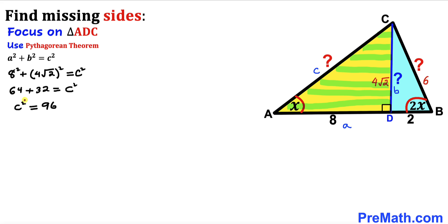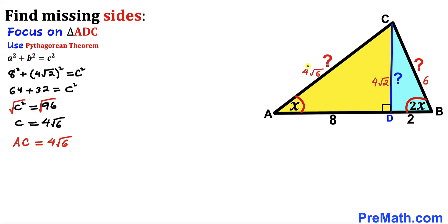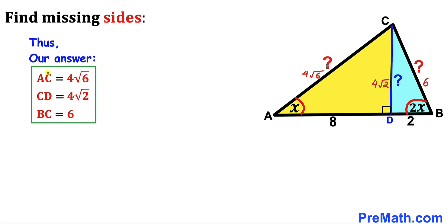Taking the square root of both sides, AC equals the square root of 96, which simplifies to 4 times the square root of 6. So our final answers are: AC = 4√6 units, CD = 4√2 units, and BC = 6 units.